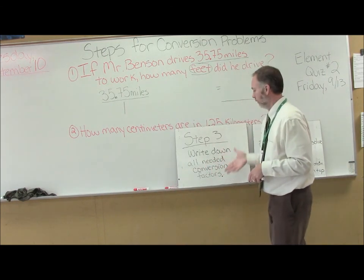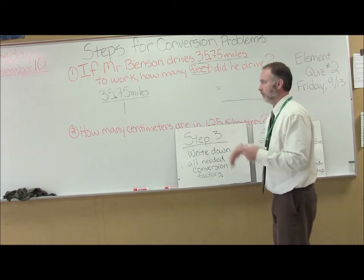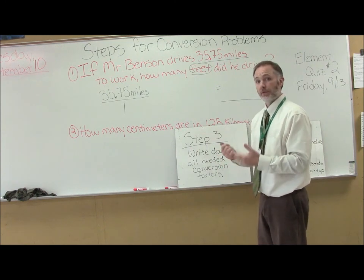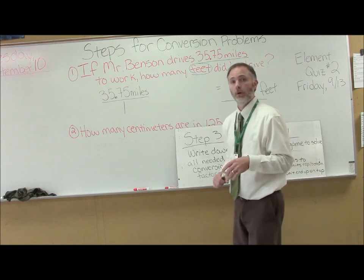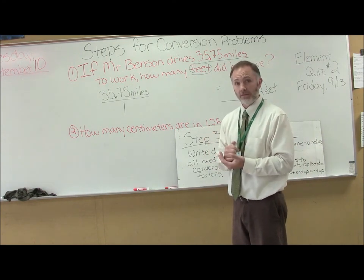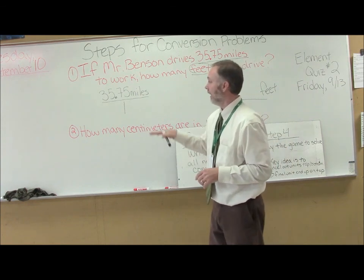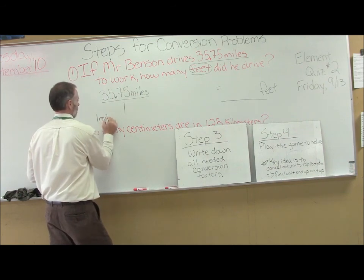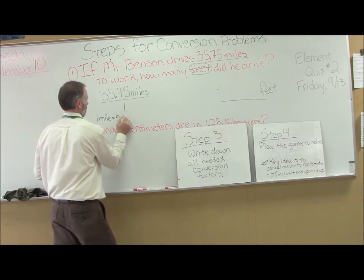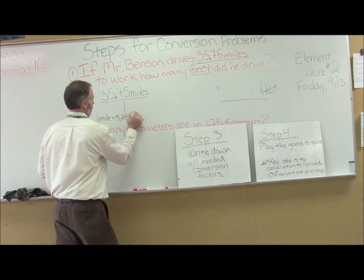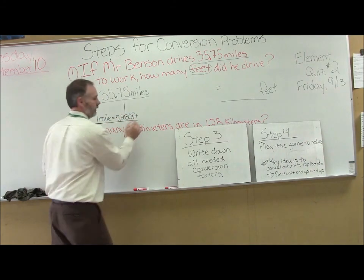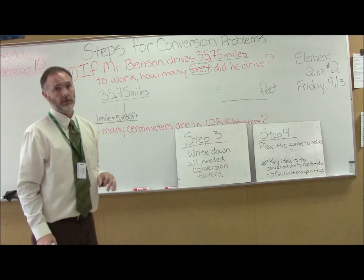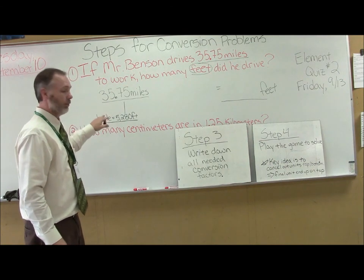Step three: write down all your needed conversions. You may not know this off the top of your head, but one mile equals 5,280 feet. Write that to the side or underneath. That's the game piece I use to get from miles to feet — this conversion factor is an important piece in our game.